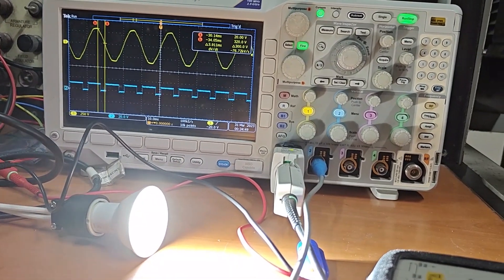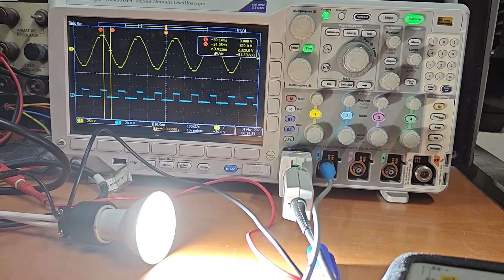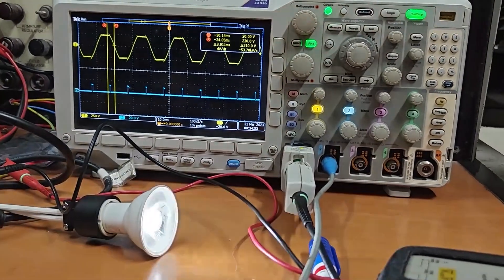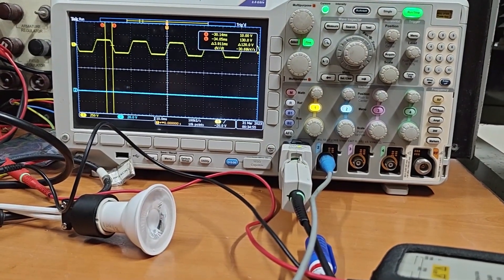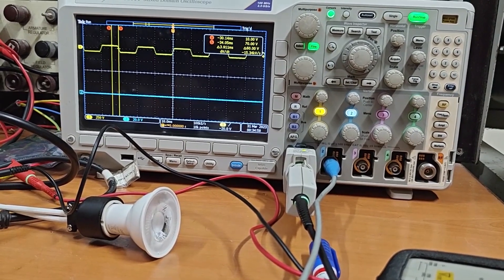This bulb glows normally on full pulse but when I decrease the pulse width it does not change the brightness but then suddenly turns off when provided with even narrower pulse.